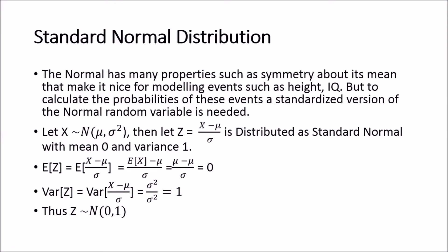We standardize the normal distribution to make it the standard normal distribution so that we can easily calculate probabilities, because people have already worked out a whole table where you can read these things off. You will be asked to read off a normal table with all the probabilities and their corresponding z-scores. The letter Z is typically used to indicate the standard normal distribution.